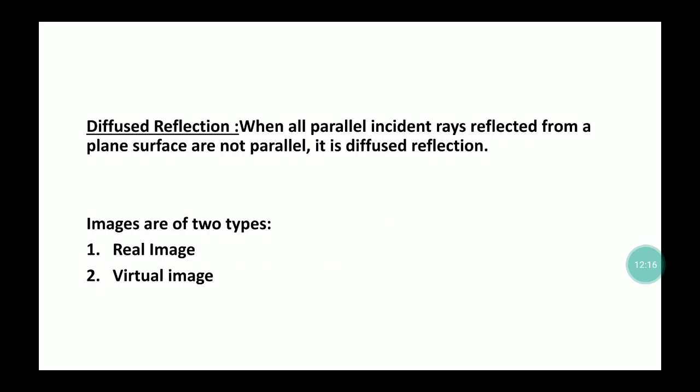Diffused reflection occurs when parallel rays are incident on an uneven or rough surface. After reflection, the rays scatter in different directions rather than remaining parallel. This is called diffused reflection. There are two types of images: a real image, which can be formed on a screen, and a virtual image, which cannot be formed on a screen.